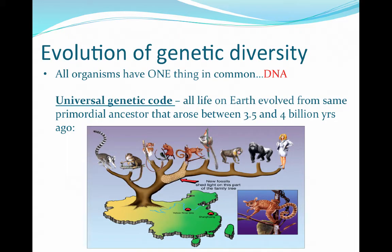So genetic diversity has really evolved over time. One of the guiding principles is that all organisms have one major thing in common, and that's DNA, or deoxyribonucleic acid. DNA is a universal genetic code from which all life on Earth evolved from a primordial ancestor. This is the evolution theory, which states that this primordial ancestor arose between 3.5 and 4 billion years ago and evolved into all the organisms that we have today.